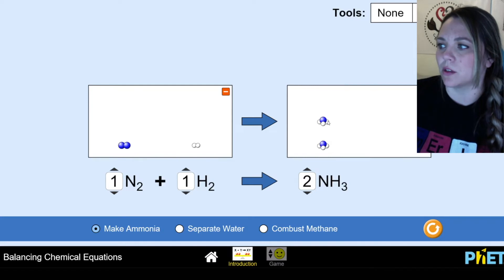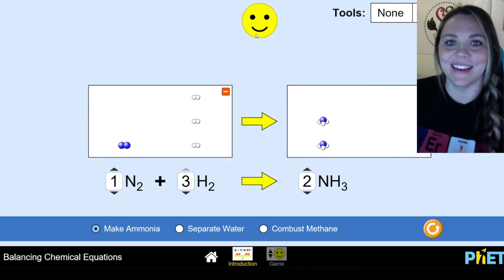But your hydrogens are not balanced, right? You have one, two, three, four, five, six. So I need to have one, two, three, four, five, six. Yay! Happy faces.